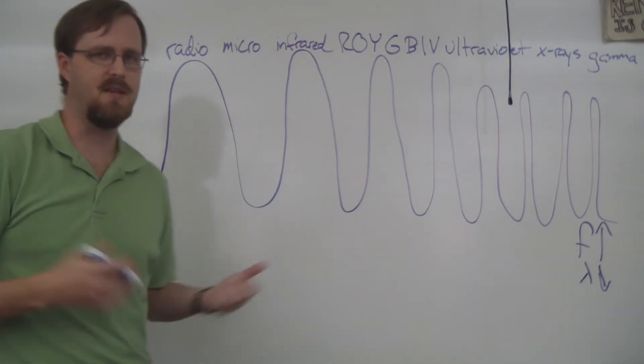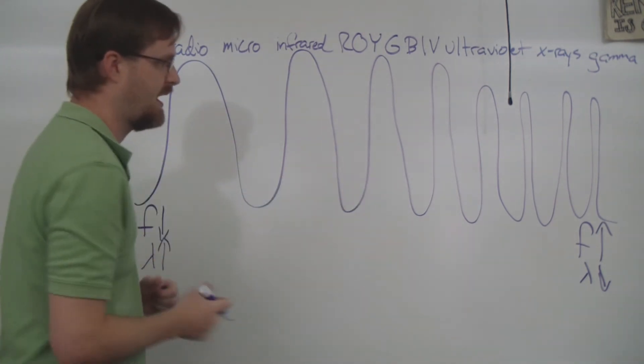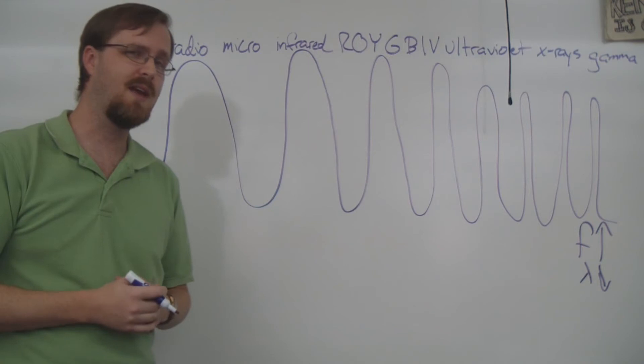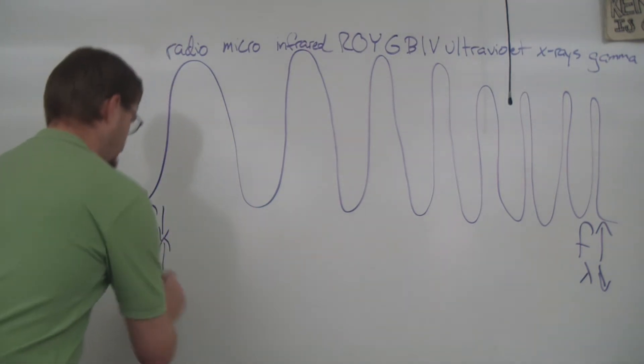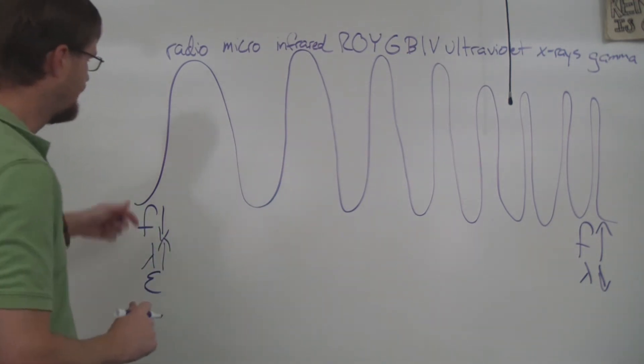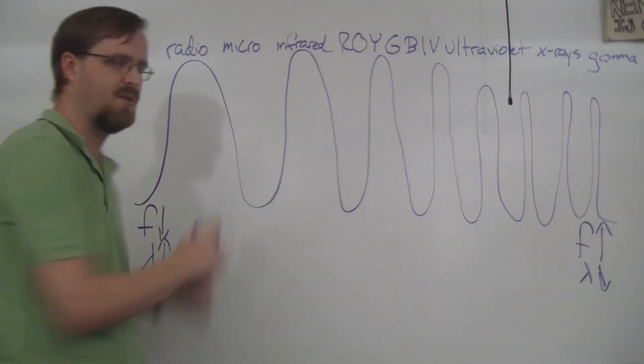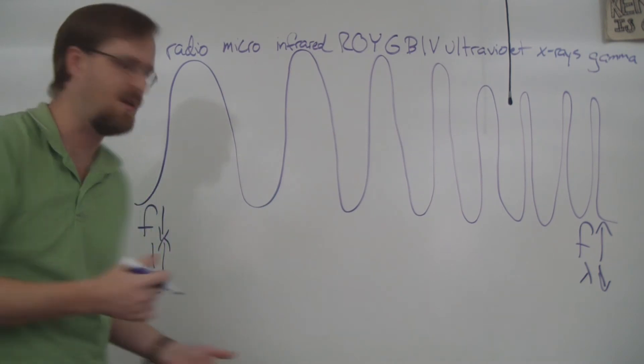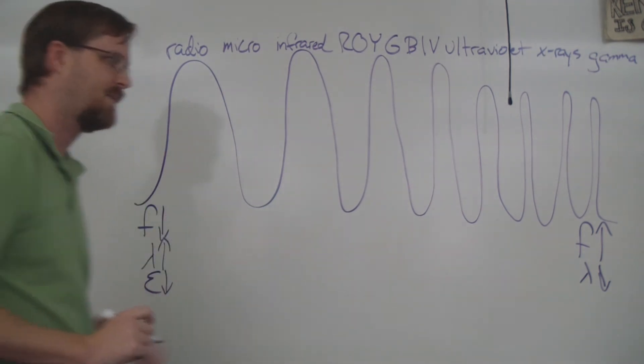And then our last variable is energy. Now we can't exactly see energy when we look at the spectrum, but we can figure it out based on frequency and wavelength. Energy is abbreviated with a capital E. So if we have a low frequency, so they're moving pretty slowly, and a long wavelength, so they're spread out, it's pretty easy to understand how we're going to have a low amount of energy on this side.